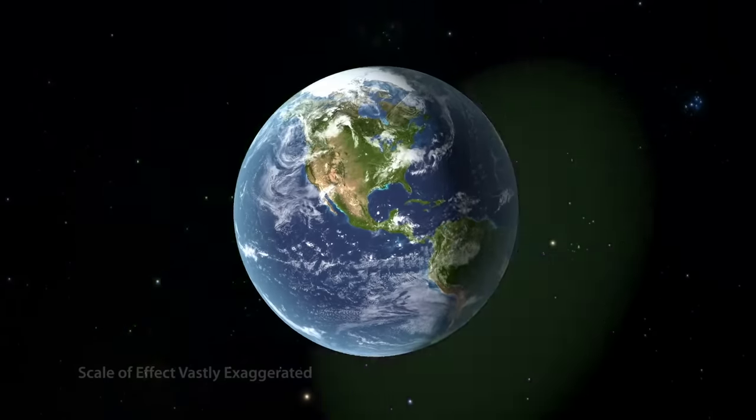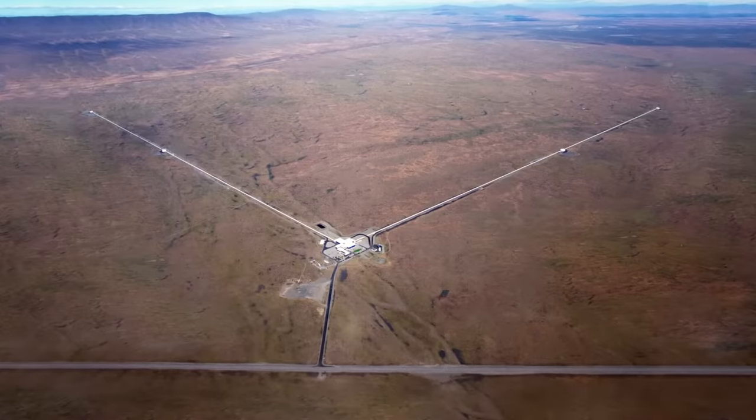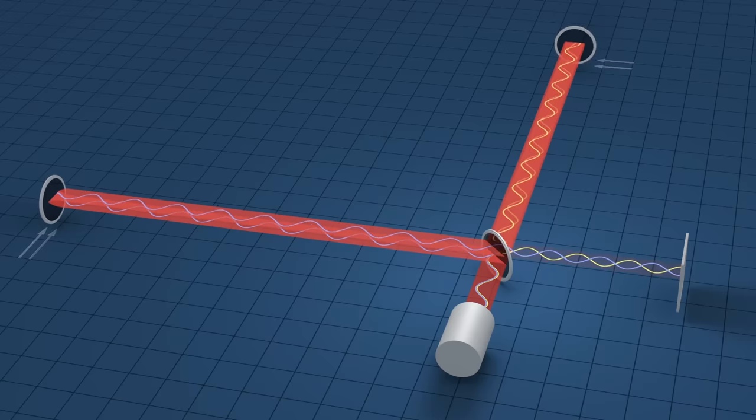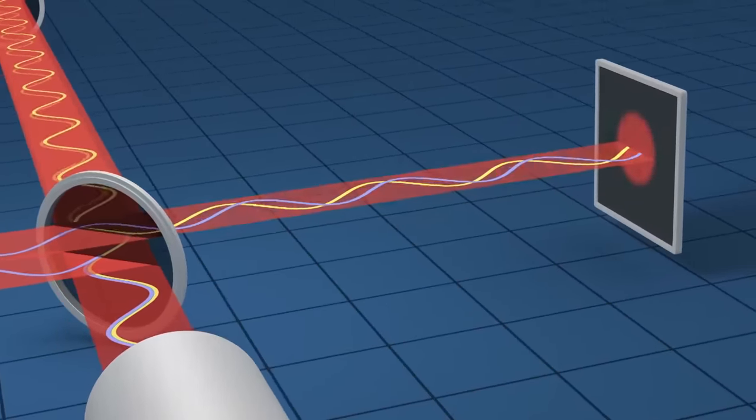Where they stretched and squeezed space such that two light beams traveling in perpendicular pipes were put slightly out of step, allowing humans to detect the existence of gravitational waves for the first time.